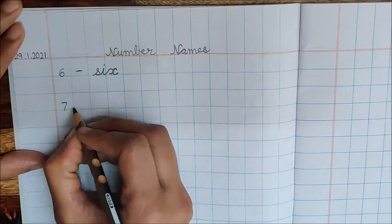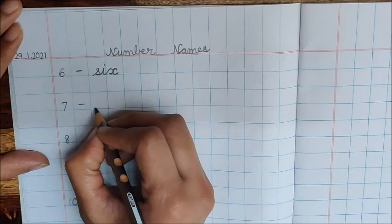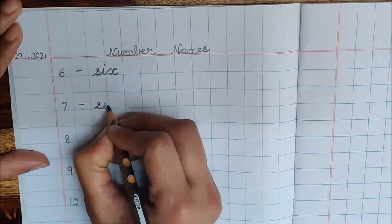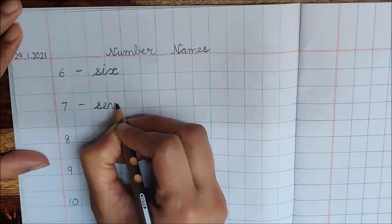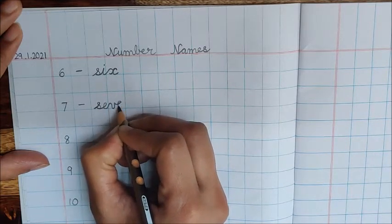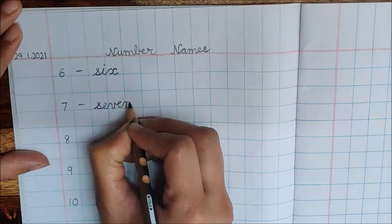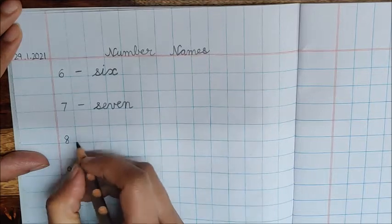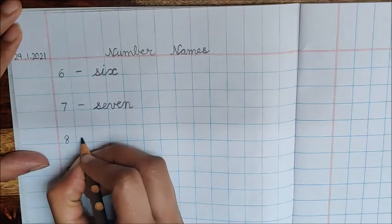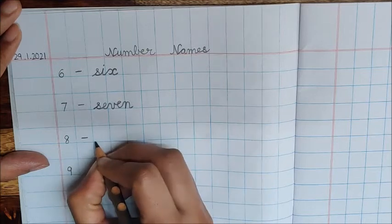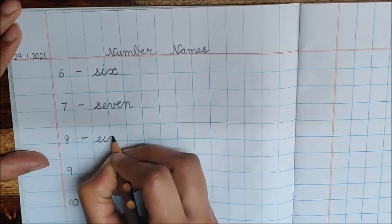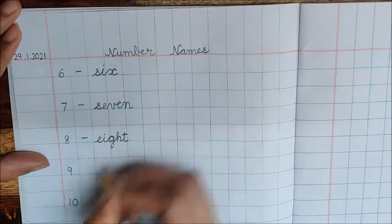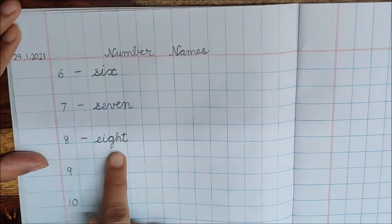Now what is the spelling of 7? After 7, put a dash. The spelling of 7 is S-E-V. See, I have made a smiley. Now make a loop behind. E-N. S-E-V-E-N, 7. Now what is the spelling of 8? Put a dash first and write down E-I-G-H-T, 8.